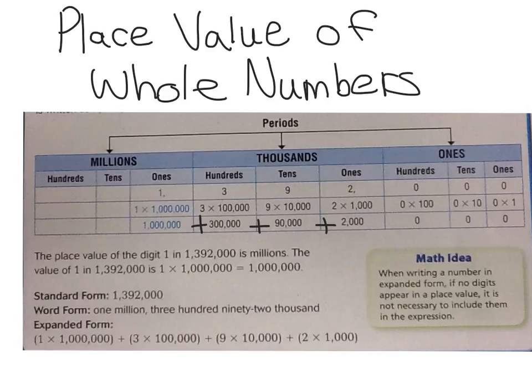So it just looks a little bit different. They still represent the same thing. You're just breaking it down even further to show exactly which place value you're in and which digit is in that place value.